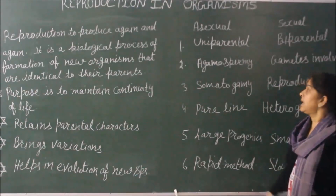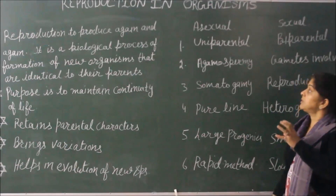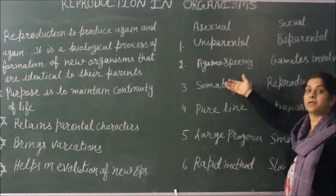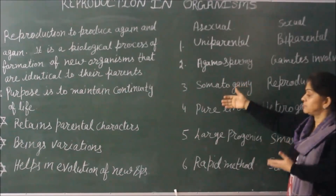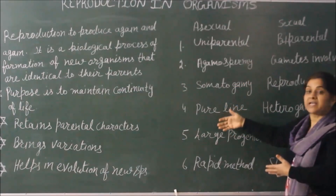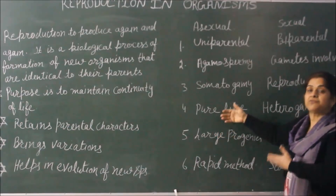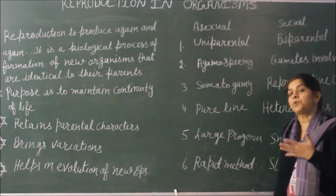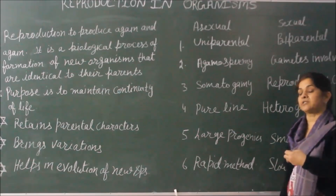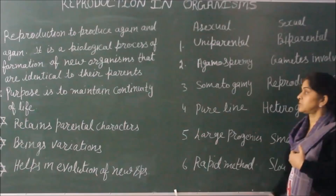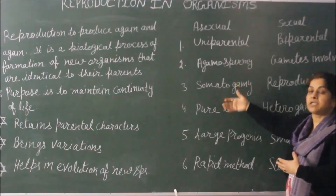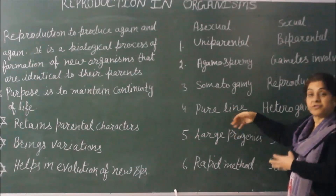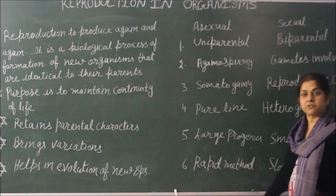In asexual reproduction, pure lines are involved. Pure lines mean genetically similar or homogeneous offspring. Since it is uniparental, taken from a single cell, the offspring will be identical to their parents. This means we can retain good characters or pure line characters of a plant through asexual reproduction.